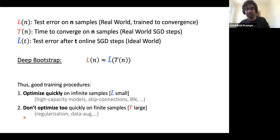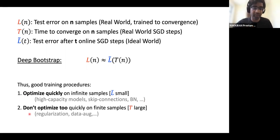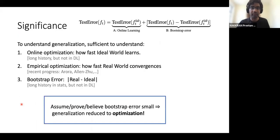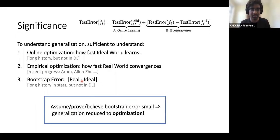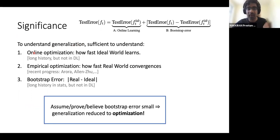This implies that good procedures in deep learning have two qualities: first, they optimize quickly on infinite samples in the ideal world — meaning L̃(t) converges quickly; and second, they don't optimize too quickly on finite samples — meaning T(n) should be large. These are somewhat in conflict, but you can view all advances in deep learning through the effect on these two factors. The significance is that if the bootstrap error is small, understanding generalization reduces to understanding online and empirical optimization.